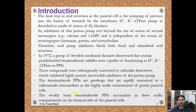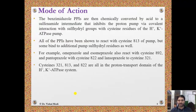These compounds were subsequently converted to sulfoxide derivatives which exhibited highly potent irreversible inhibition of the proton pump. The benzimidazole proton pump inhibitors are prodrugs that are rapidly converted to a sulfenamide intermediate in the highly acidic environment of gastric parietal cells. The weakly basic benzimidazole proton pump inhibitors accumulate in this acidic compartment on the luminal side of the parietal cells.